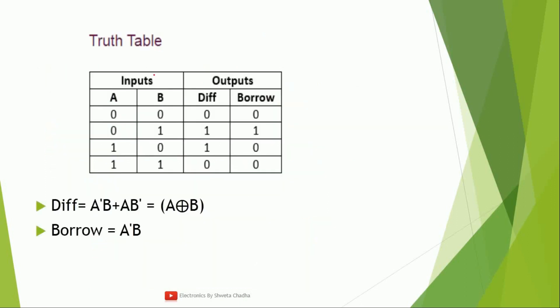Next is the truth table. In the truth table we are going to see how two bits are actually going to be subtracted. We have A minus B — this is the function which is going to be performed. Zero minus zero: difference is zero, borrow is also zero.